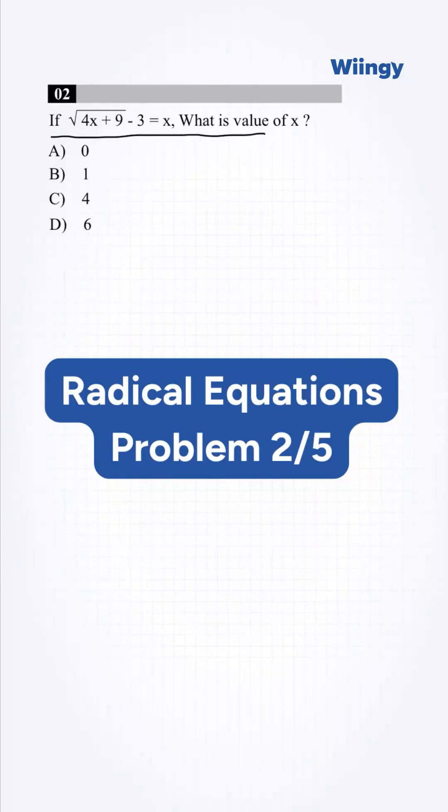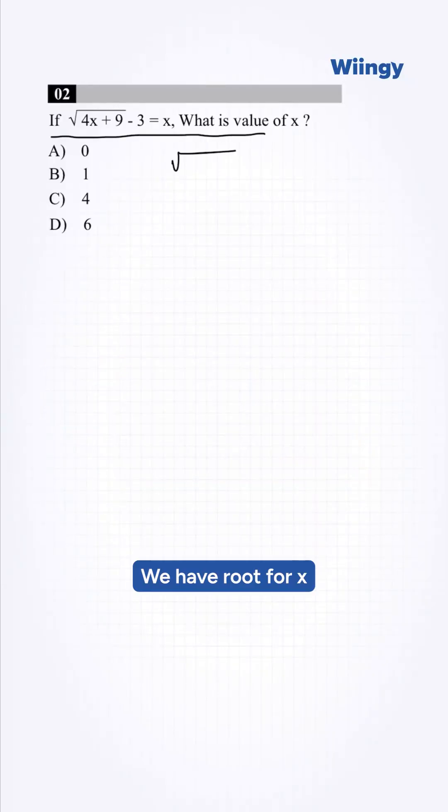Can you solve this SAT Math radical equation question fast? We have √(4x+9) - 3 = x. We need to find the value of x.